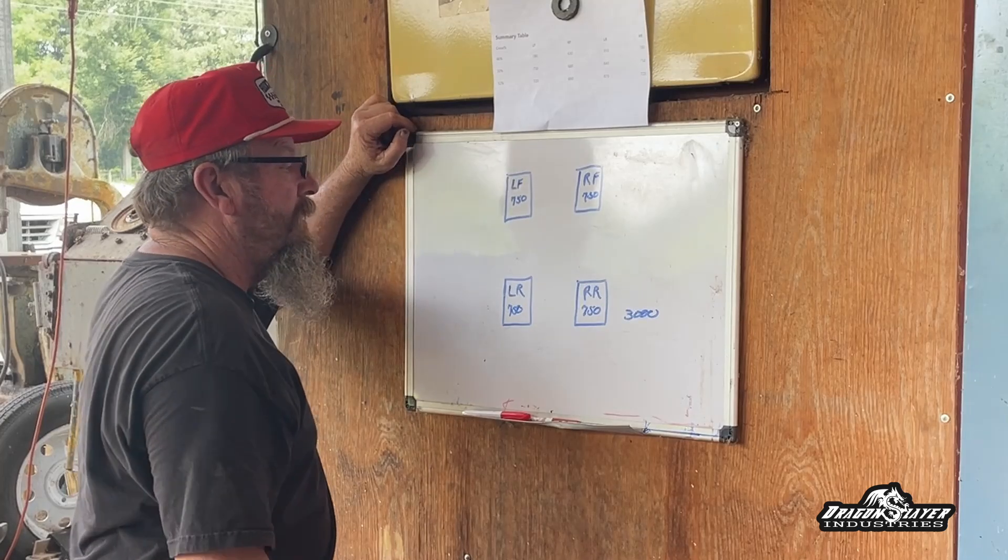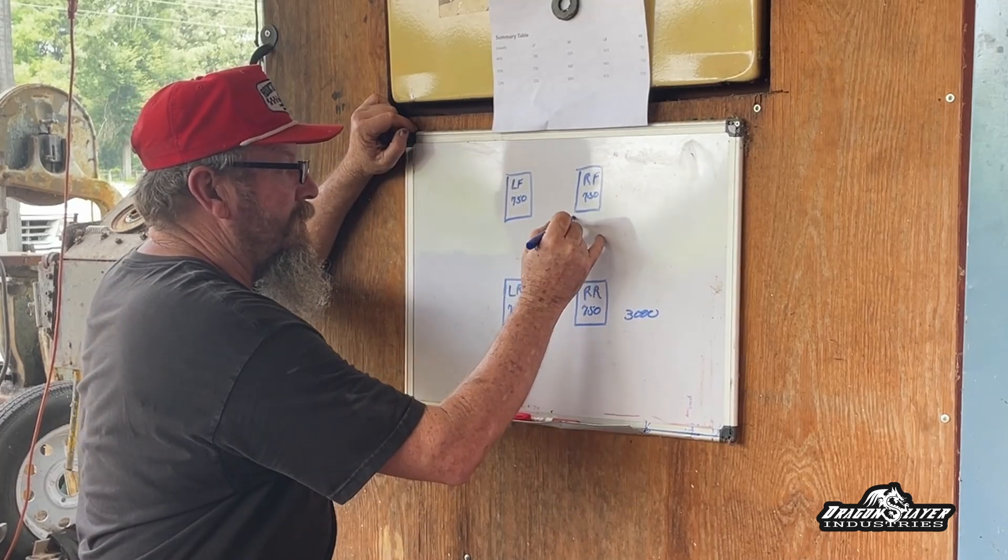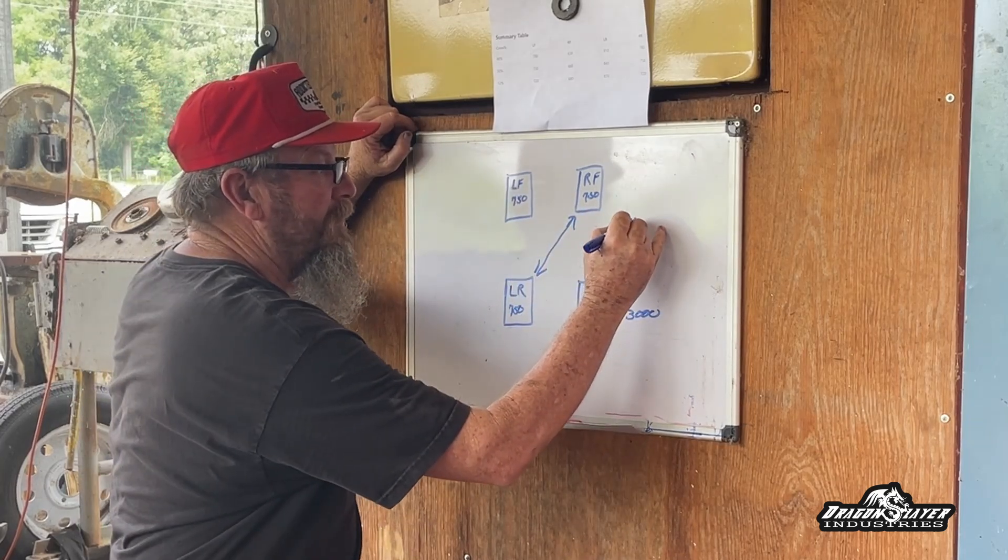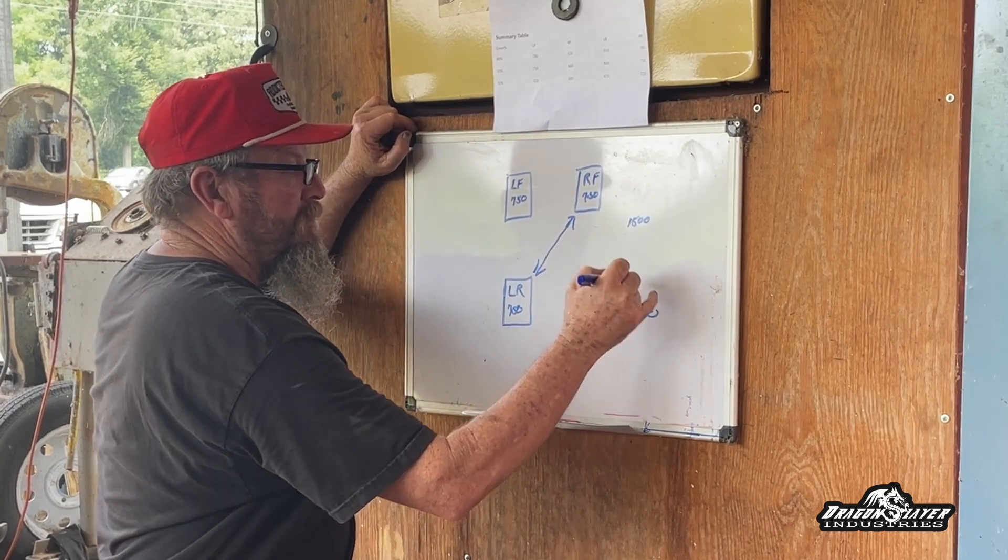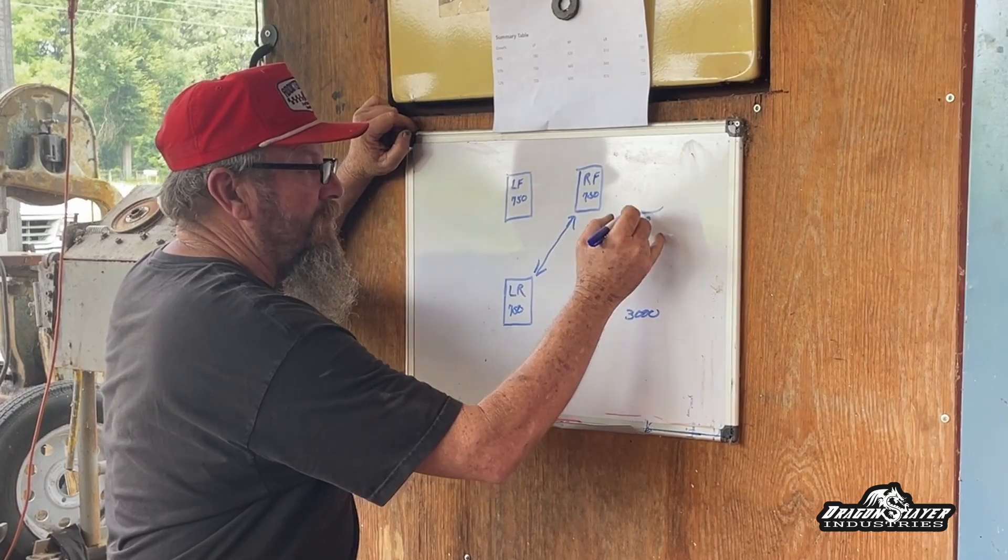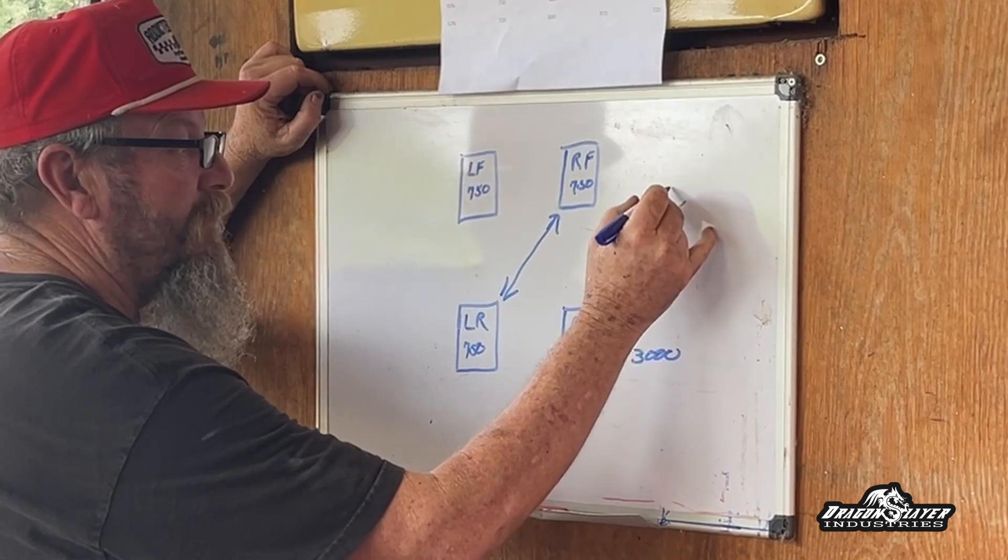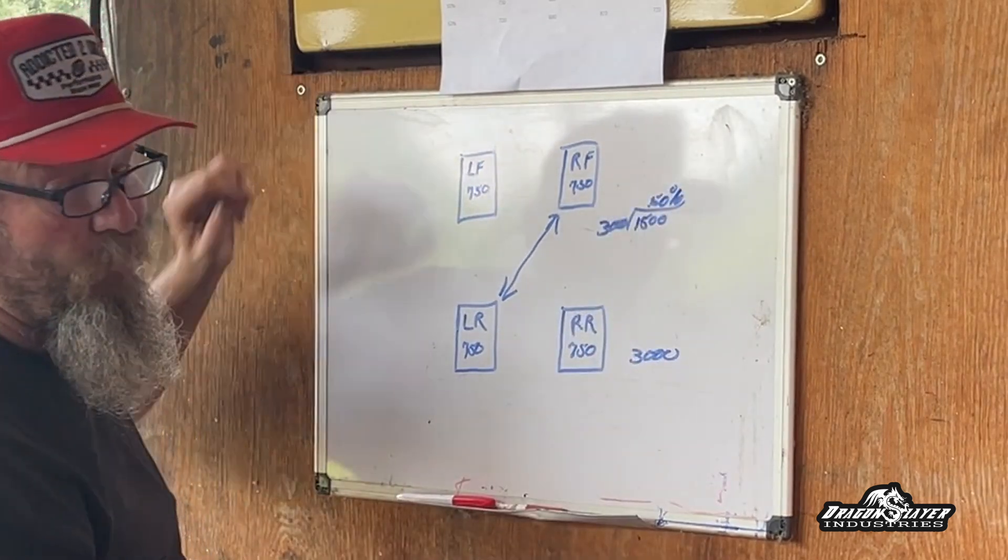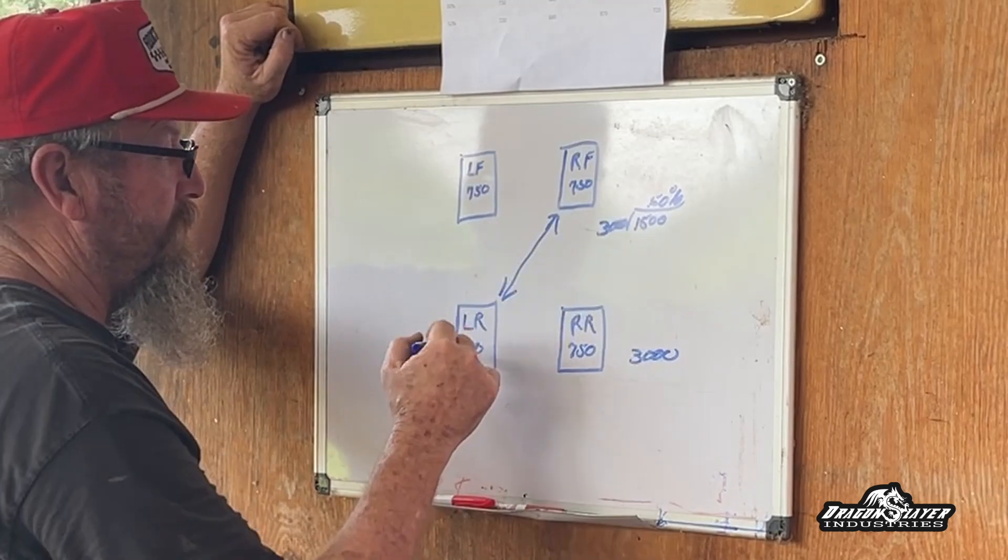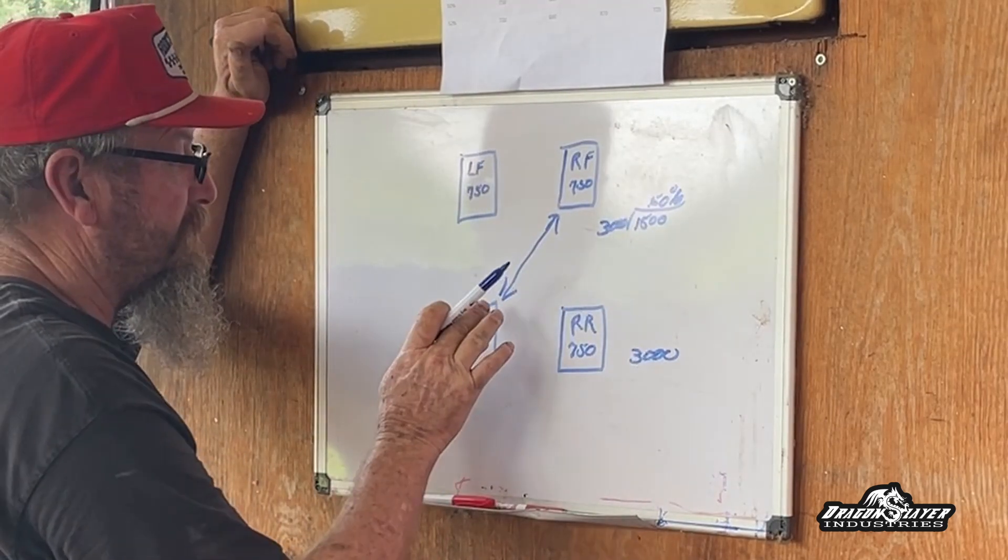In this instance the right front and left rear add up to 1,500 pounds, total weight 3,000, and that's going to come out to 0.50 or 50 percent. So a car that's perfectly balanced has 50 percent cross weight in it.